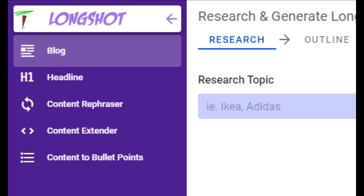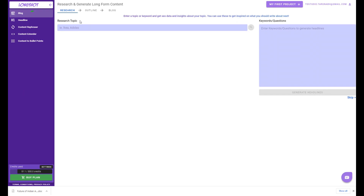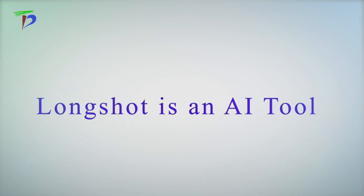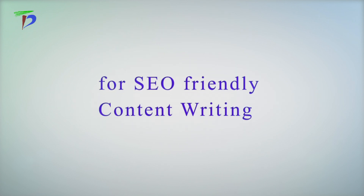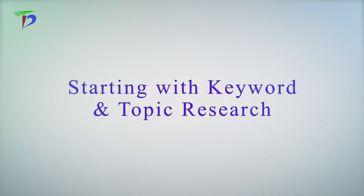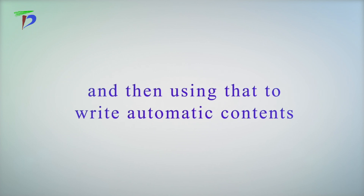Hello everyone. Today I'm back again with another walkthrough review video. I'll be testing out a tool which is a combo of SEO optimization, keyword research, and generating content with the help of AI technology. The tool is called Longshot AI. I'm lucky enough to try out a very early beta version. Longshot is an AI tool for SEO-friendly content writing, starting with keyword and topic research, then using that to write automatic content for social media, blog posts, and marketing purposes. Without further ado, let's dive in.